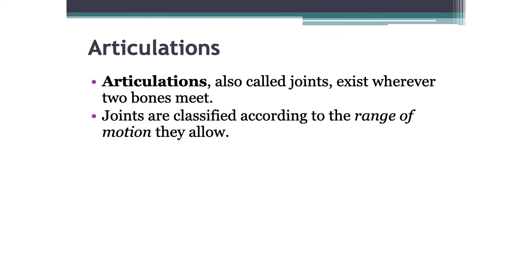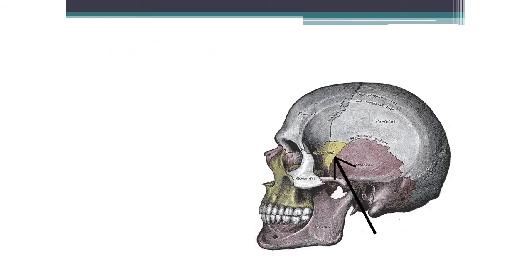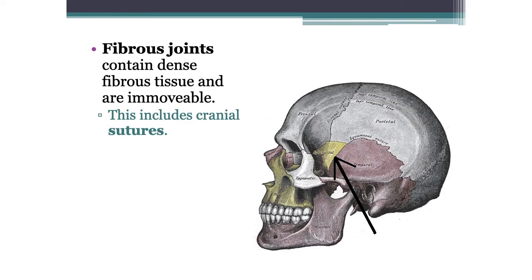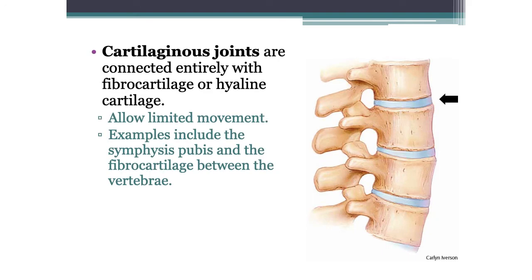Articulations are also called joints and exist wherever two bones meet. Joints are classified according to the range of motion that they allow, based on how movement occurs between them. Fibrous joints contain dense fibrous tissue and are immovable — the cranial bones come together in fibrous joints and they're not going to move.